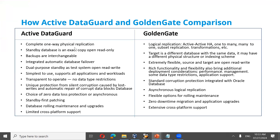In Active Data Guard, the standby database is an exact copy, opened in read-only mode. In Golden Gate, the target is a different database with the same data — it may have a different physical structure or indexing scheme. You can add columns on target tables and perform data filtration and transformation. In Active Data Guard, backups are interchangeable since data is always the same. In Golden Gate, data may not be identical, so backups cannot be interchangeably used between source and target.